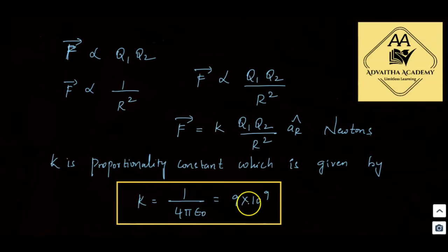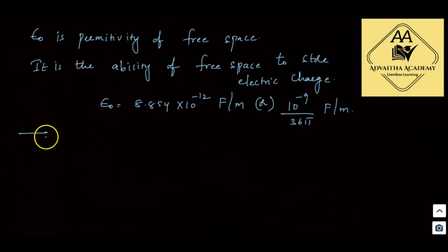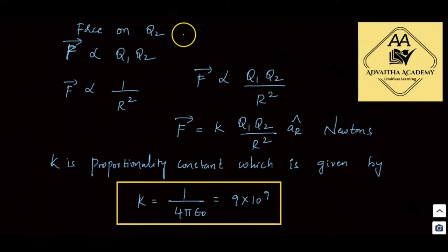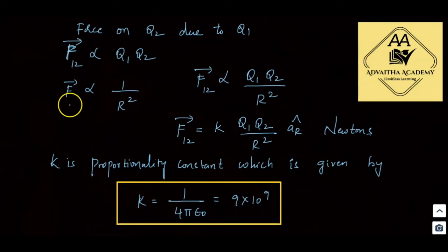One important point: force is a vector quantity. The main force formula is: F-bar = k · q1·q2 / r² · r-cap. F12-bar is the force on q2 due to q1, written as F12. F21-bar is the force on q1 due to q2.